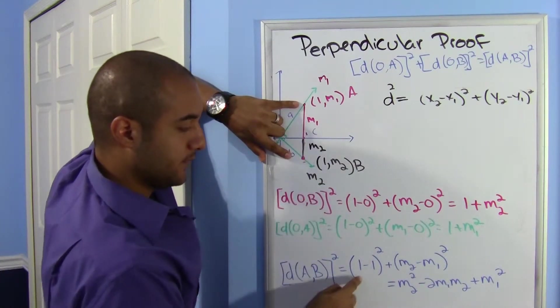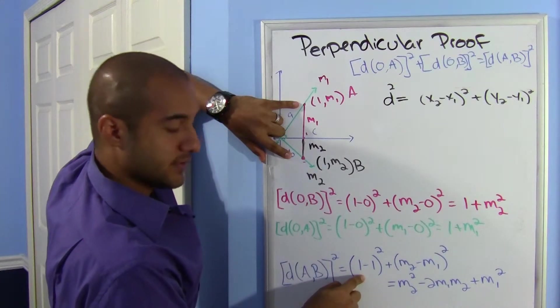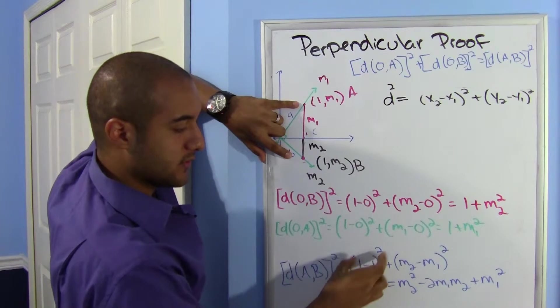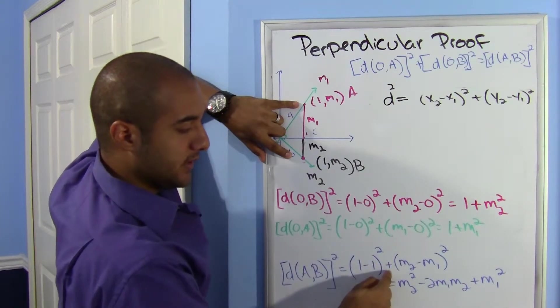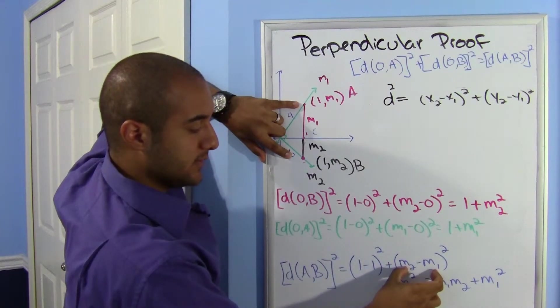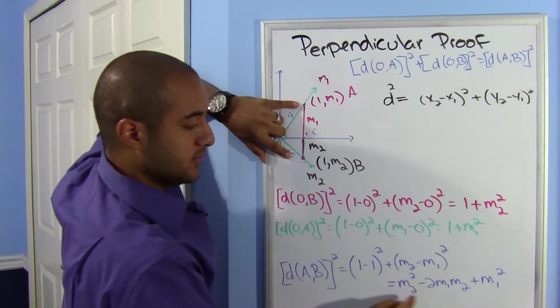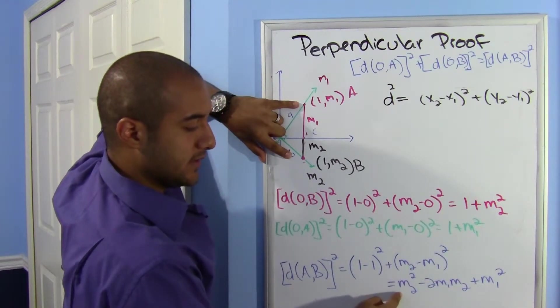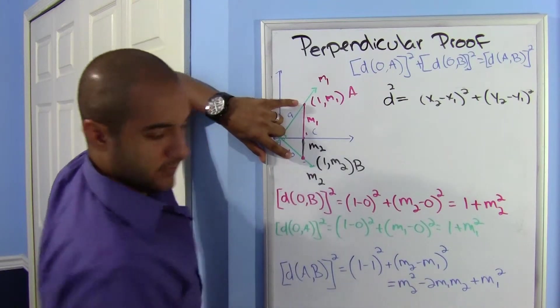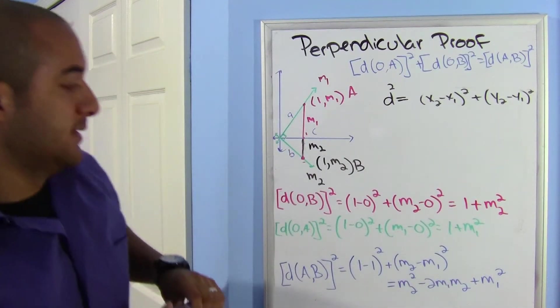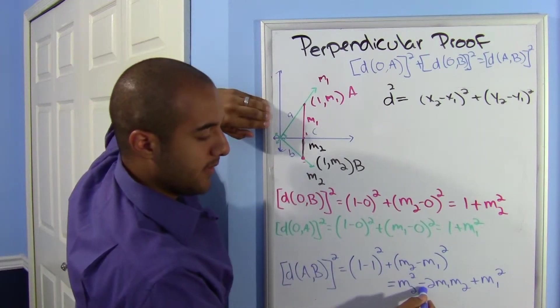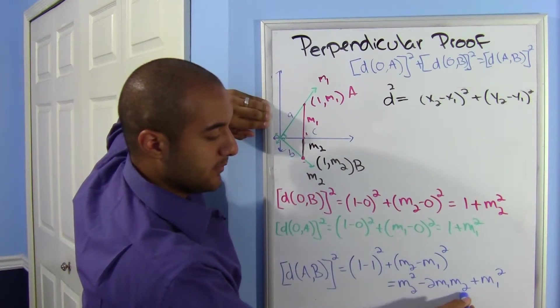That's it. From A to B, okay, I use these coordinates. So here are my x's—the difference of the x's is 1 - 1, okay, so that's 0, that's gone. Plus the difference of the y's squared. So when I work this out it ends up being m2 squared.